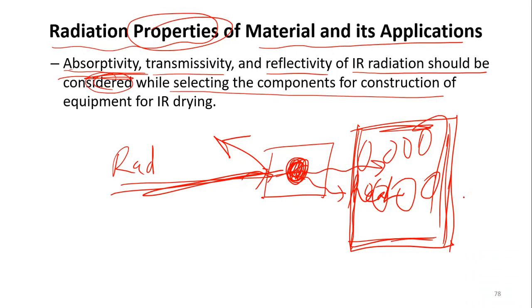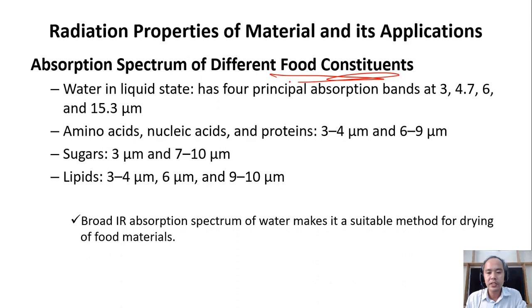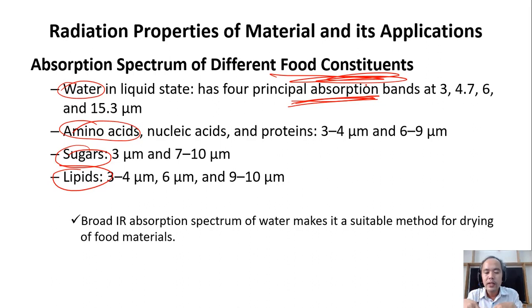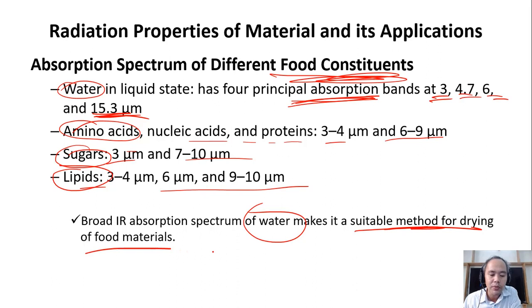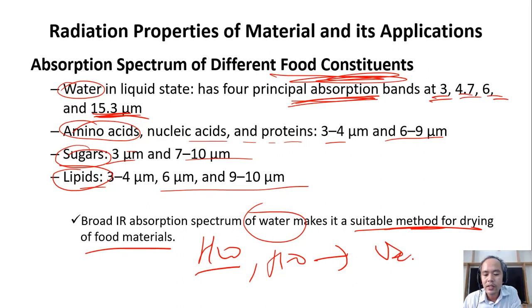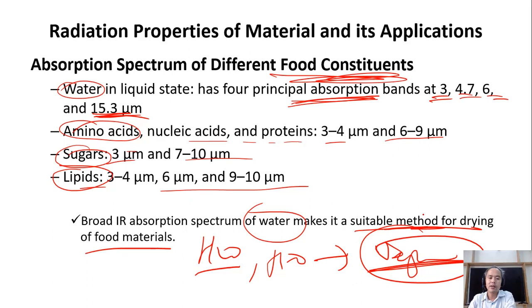For food constituents, each molecule will have a different range of wavelengths for absorption. Food constituents need to absorb the irradiation to convert it to heat by friction. Water absorbs in certain bands, amino acids and protein in other bands, sugars in their band, and lipids in their band. If we look at water, it can absorb many bands of radiation — meaning it is quite suitable for drying food, because food contains water, we need to heat the water for it to evaporate into vapor. It is an advantage that water can absorb infrared radiation easily.